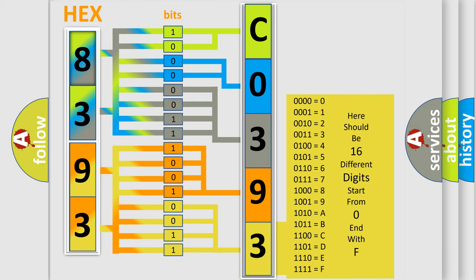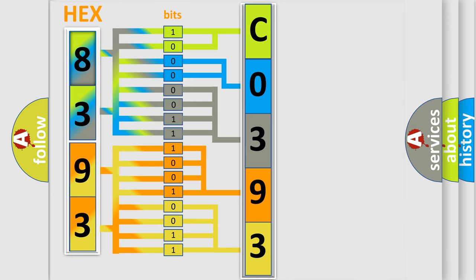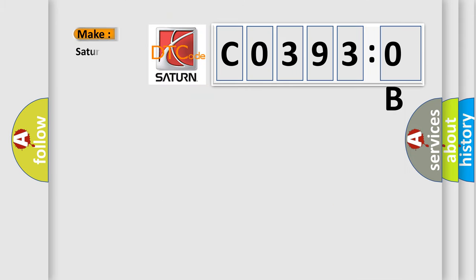We now know in what way the diagnostic tool translates the received information into a more comprehensible format. The number itself does not make sense to us if we cannot assign information about what it actually expresses. So, what does the diagnostic trouble code C03930B interpret specifically for Saturn car manufacturers?